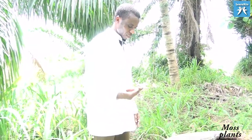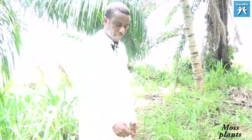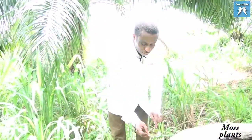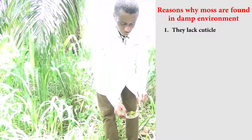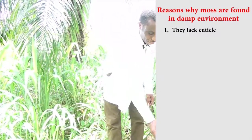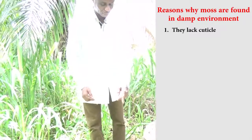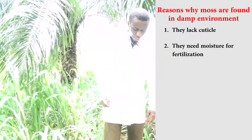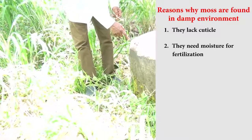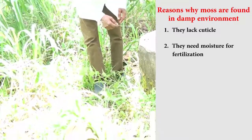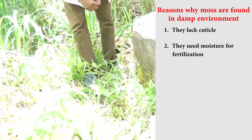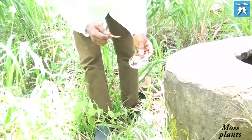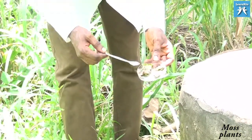Nature has adapted terrestrial plants to have a cuticle covering their surface. But moss — one of the characteristics of this group of organisms is that they lack cuticle. Because they lack cuticle, they lose water easily. That is why they can only do well in a very humid environment, so that the rate of evaporation is reduced. Another reason is that they need moisture for fertilization — the sperm has to swim from the sex organ to the female organ, and without water, fertilization cannot take place. These are the two main reasons why moss plants are confined to a damp environment: lack of cuticle, and water as a medium for the male gamete to swim to the female gamete.